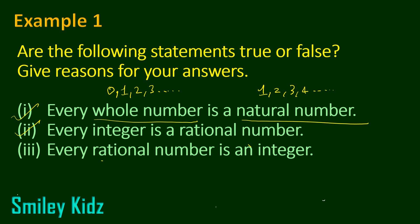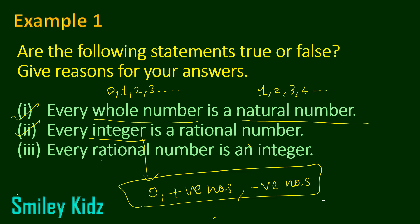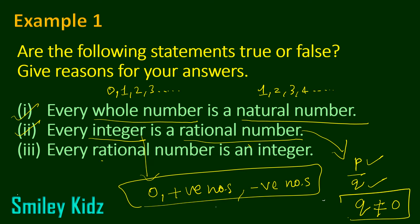Then we have the second statement: every integer is a rational number. What is an integer? An integer is a collection of 0, positive numbers, and negative numbers. 0 is neither positive nor negative. Then we have rational numbers. Any number that can be expressed in the form of p by q, where both p and q are integers and q should not be equal to 0. So these were the basic definitions you need to know.